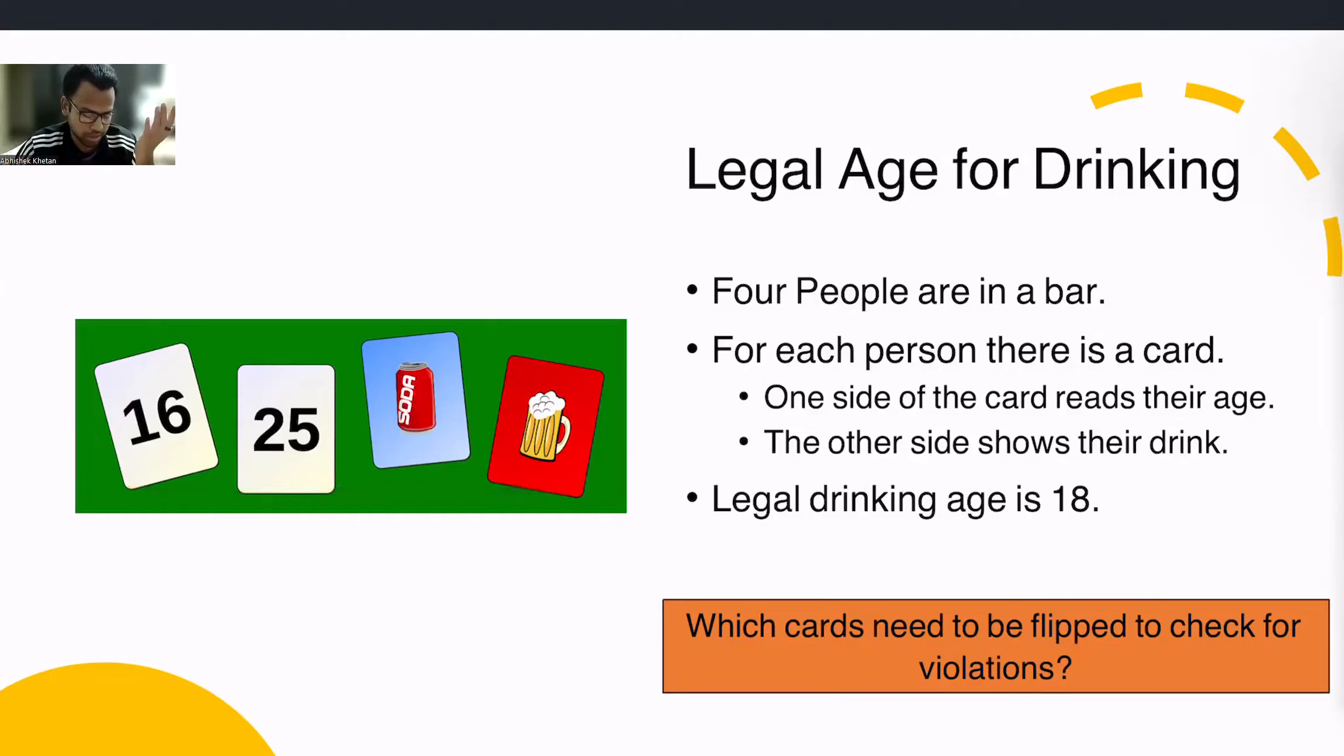Amongst these four cards, which one do you need to flip to check if any person is violating this rule, that the legal age for drinking alcohol, when I say drinking I mean alcohol. Can you please explain the question? I mean, why can't we just flip every card and check it? Right. So what's the catch here? What are the necessary ones? Of course you can flip all of them. Which ones are necessary for you to flip? Without the smallest number, you have to flip the card.